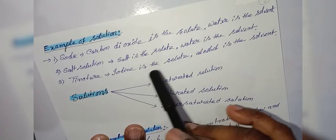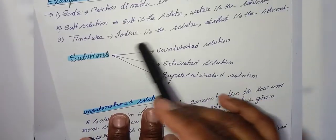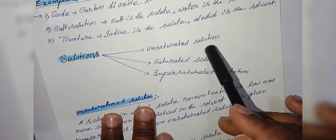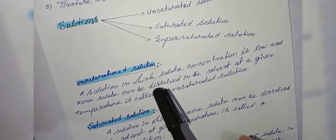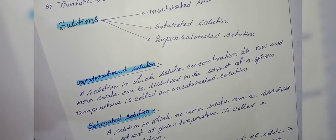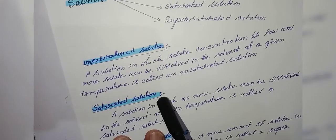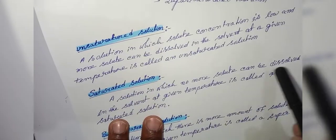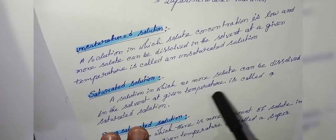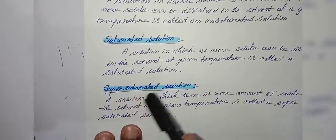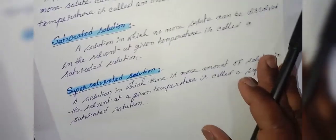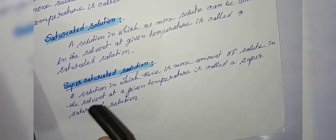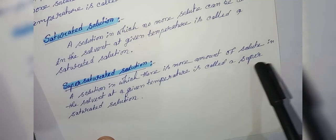Tincture of iodine — iodine is the solute, alcohol is the solvent. There are three types of solutions: unsaturated solution, saturated solution, and supersaturated solution. An unsaturated solution is one in which the solute concentration is low and more solute can be dissolved in the solvent at a given temperature. A saturated solution is one in which no more solute can be dissolved in the solvent at a given temperature. A supersaturated solution is one in which there is more amount of solute in the solvent at a given temperature.